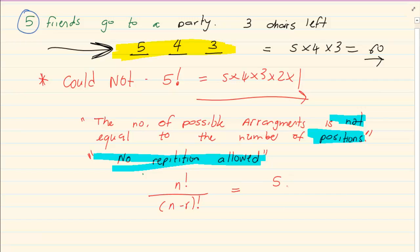So if you take it, we had five factorial over. We had five and we only had three positions factorial.